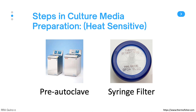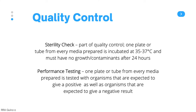The last thing you need to do is quality control, which can come in two forms. The first is a sterility check, in which one plate or tube from every media prepared is incubated at 35 to 37 degrees Celsius, and these media should have no growth or contaminants after 24 hours. Then you can also do performance testing, where one plate or tube from every media is tested with organisms expected to give a positive result and organisms expected to give a negative result. The sterility check should be done every time you prepare a fresh batch of culture media, while performance testing should be done every time you open a new bottle or new lot of culture media.